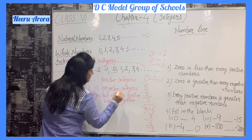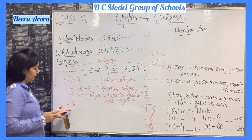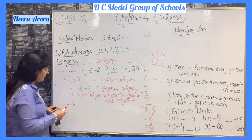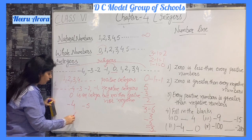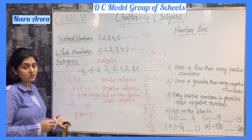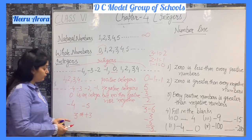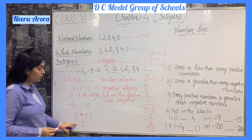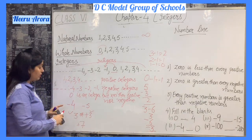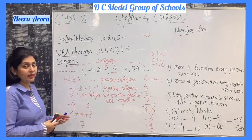How can we write integers? If we put a minus sign in front of any number, it becomes a negative integer — for example, minus 4 or minus 5. A positive integer can be written without a sign or with a plus sign. For example, 7 and plus 7 are the same. But for negative integers, we must mention the minus sign in front of the number.